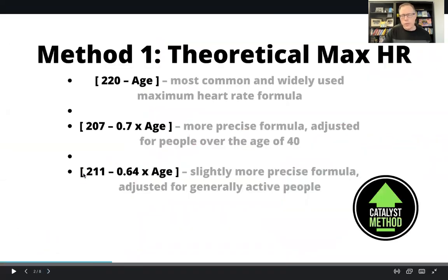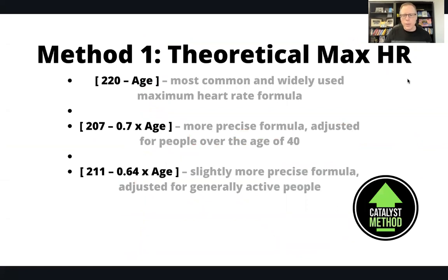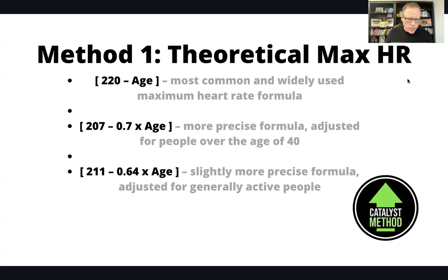There are a few ways to do this. The first way is to use your theoretical maximum — basically the equations you would see on a commercial treadmill at your gym. These are usually derived mathematically and based on population averages. The most common one is 220 minus your age. There are a few updated ones: 207 minus 0.7 times your age, and if you're active, 211 minus 0.64 times your age.